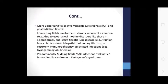Lower lung field bronchiectasis is also associated with idiopathic pulmonary fibrosis and recurrent immunodeficiency-associated infections, such as hypogammaglobulinemia. Predominantly mid-lung field involvement is seen with MAC infection and dyskinetic cilia syndrome, also called Kartagener syndrome.